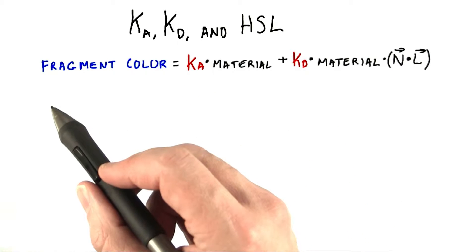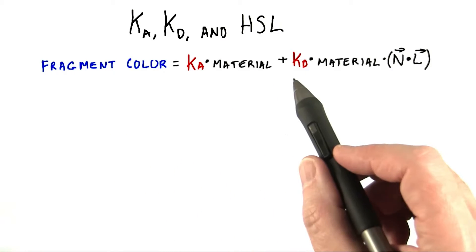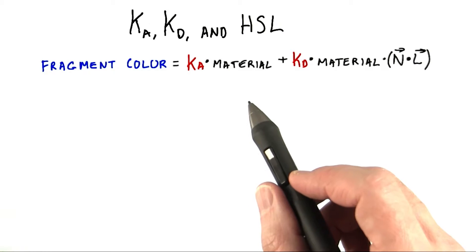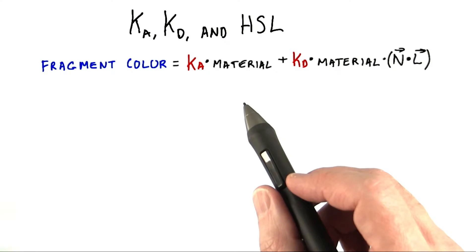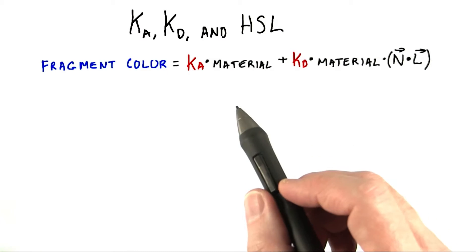To sum up the equation we used for this demo, it's fragment color equals ka times material plus kd times material times n.l. This is actually a bit simplified from what 3.js allows. In 3.js, you can set an entirely different ambient color, though to be honest, this is a peculiar thing to do.